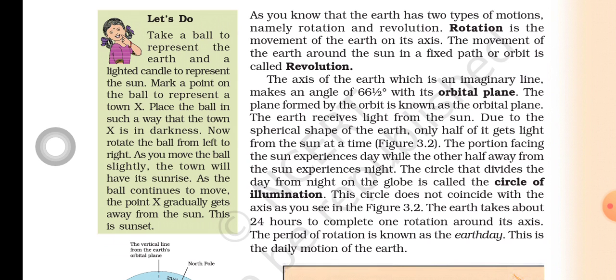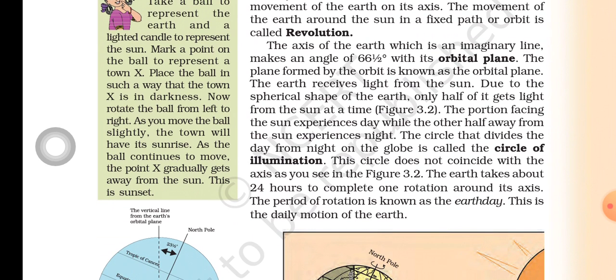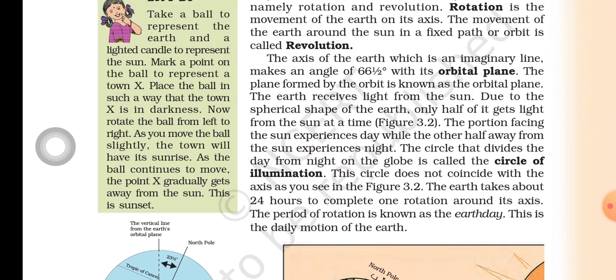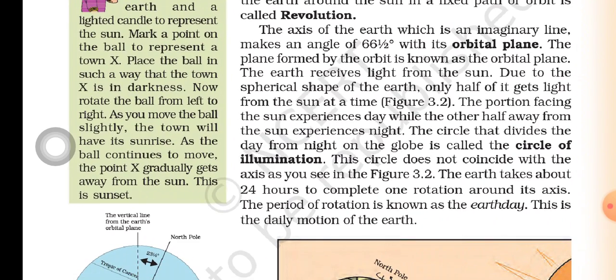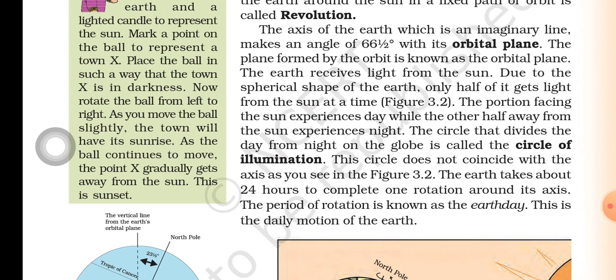By doing this activity, children, you will understand how day and night occur. The axis of the earth, which is an imaginary line, makes an angle of 66 and a half degrees with its orbital plane. The plane formed by the orbit is known as the orbital plane. The earth receives light from the sun.